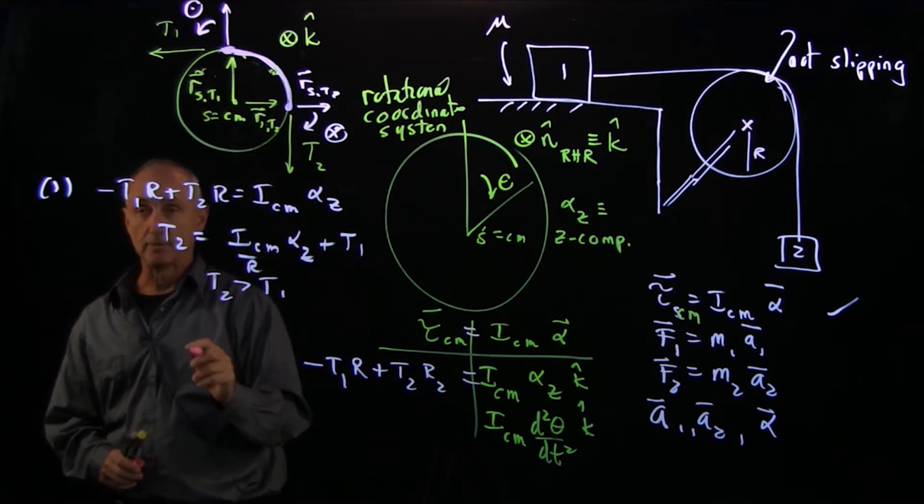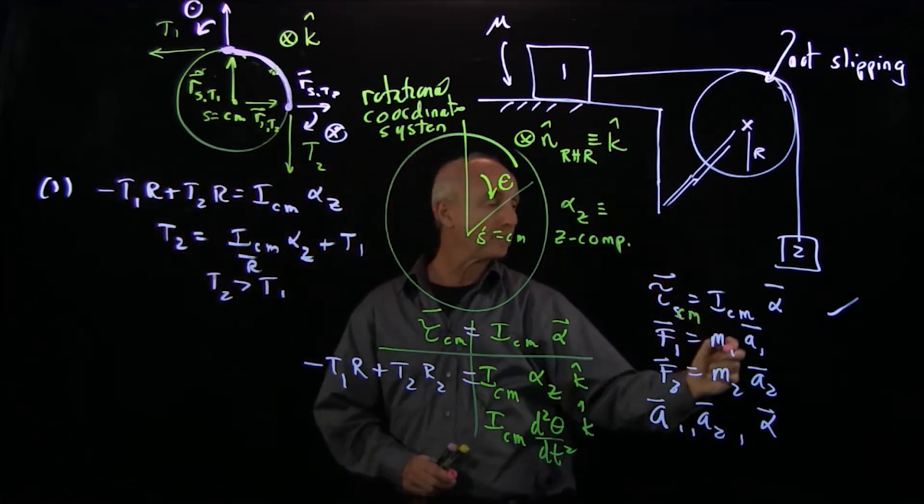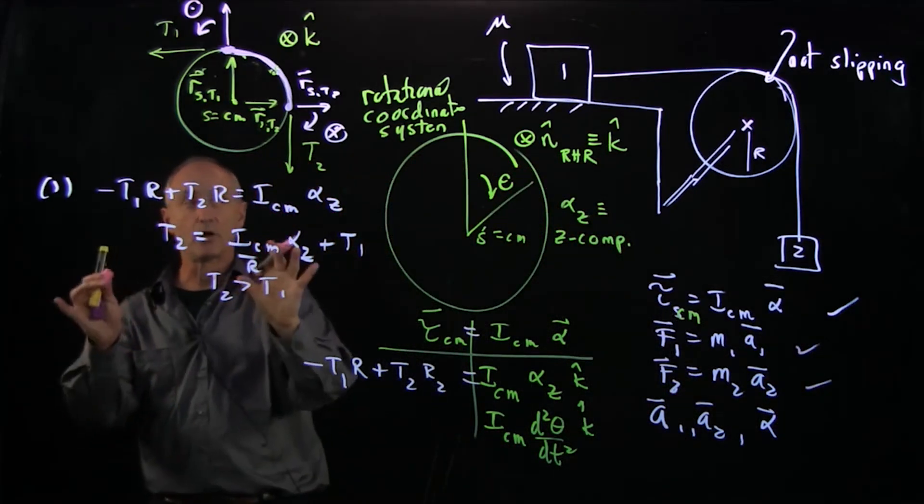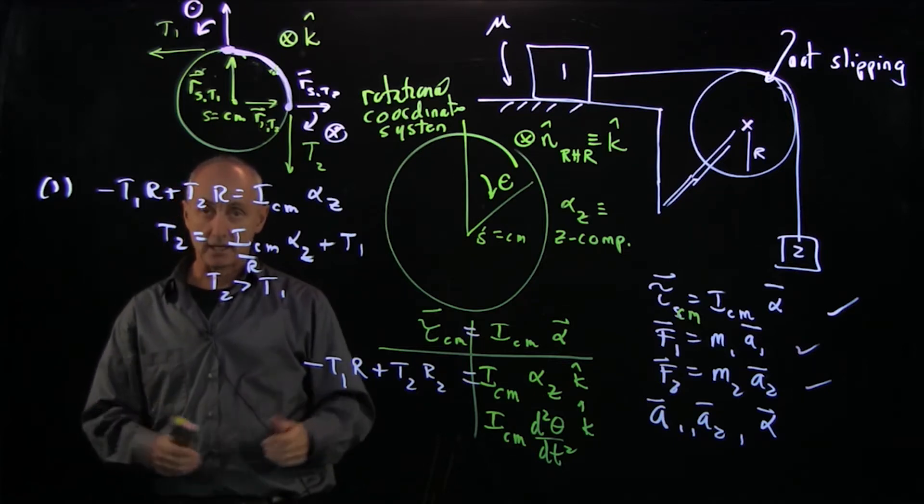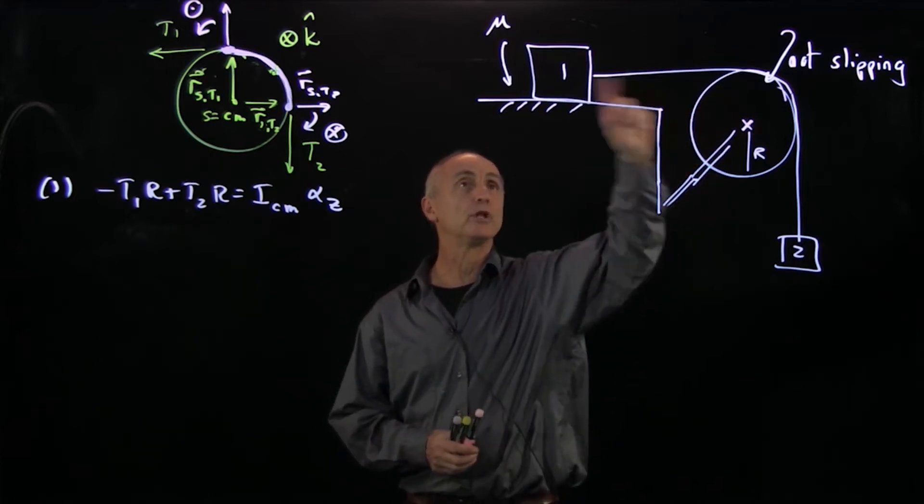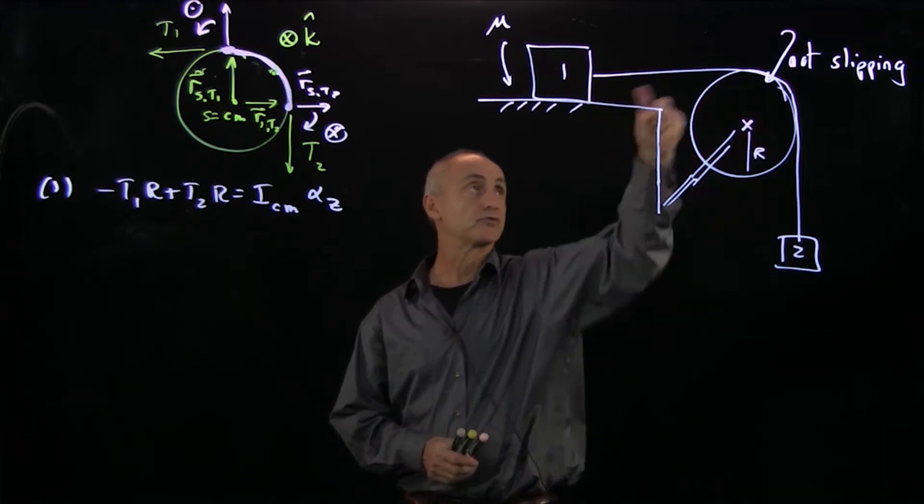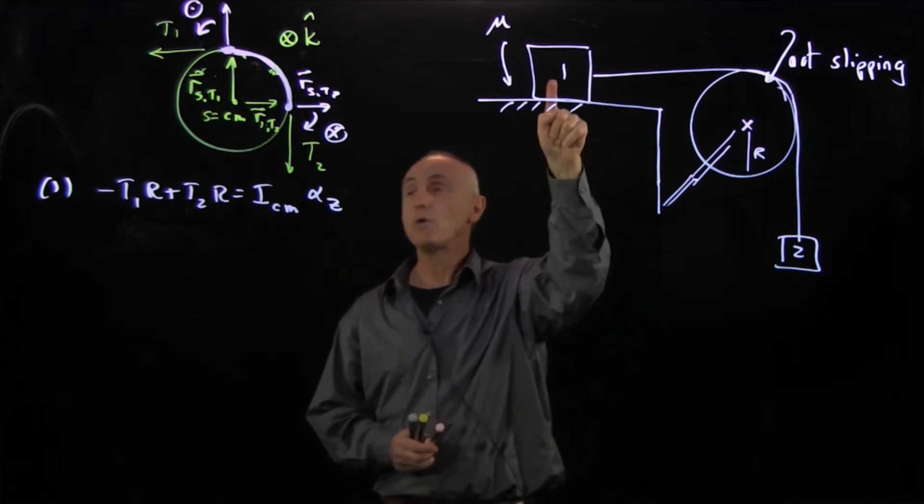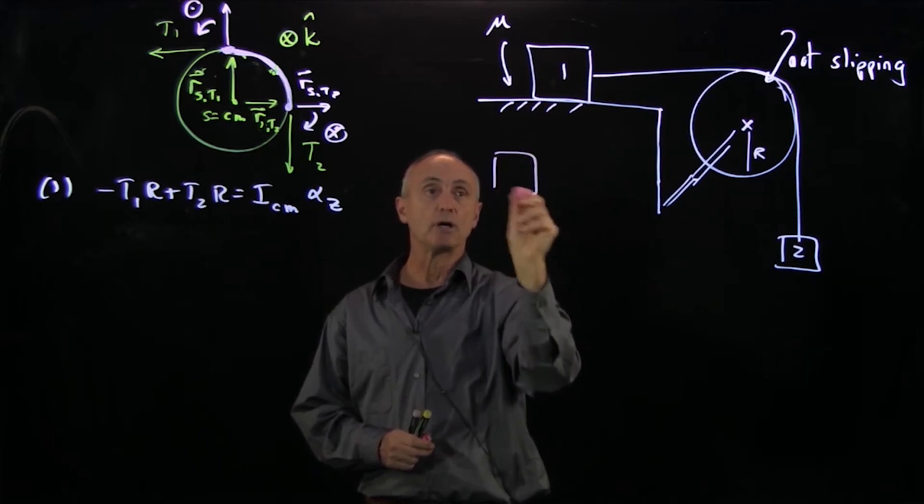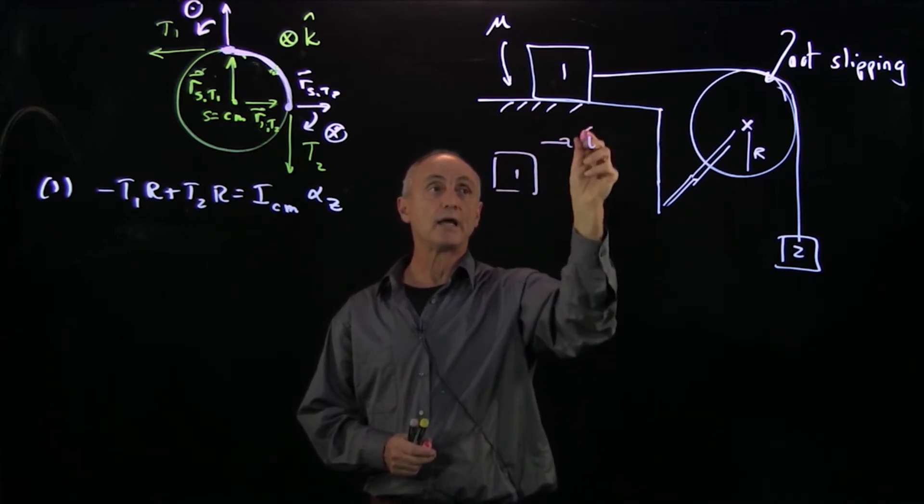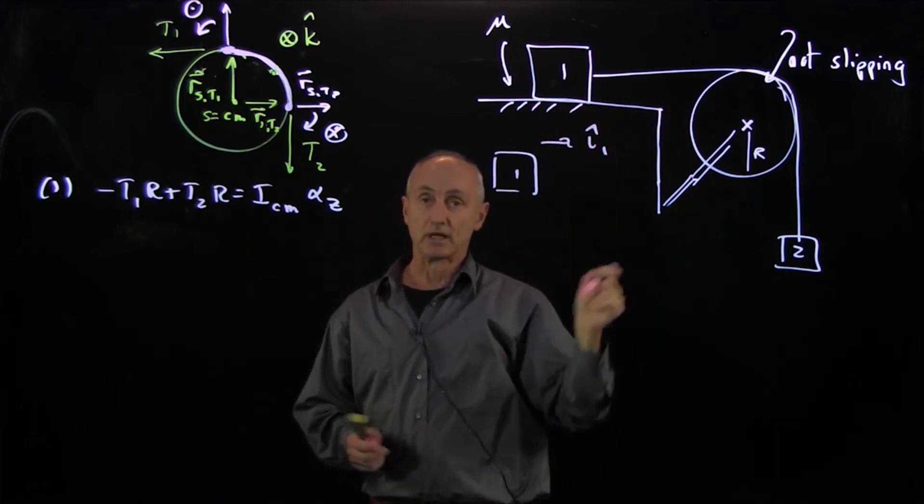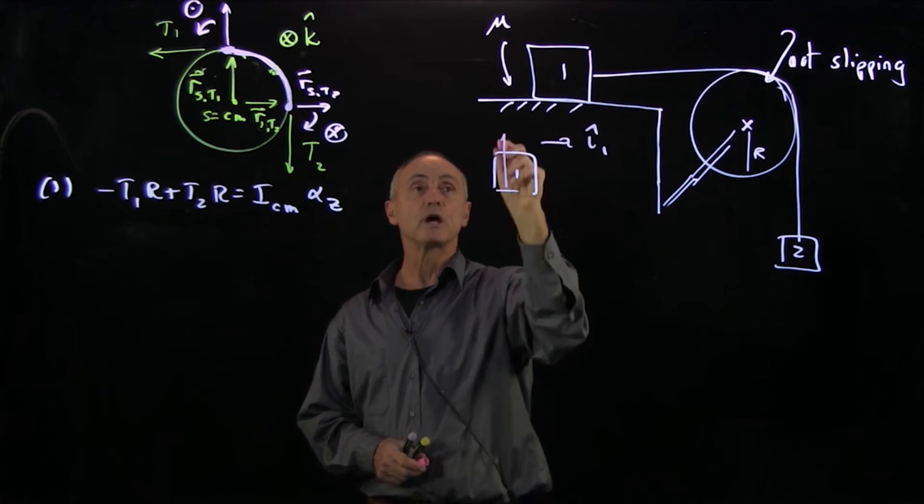The next step is to analyze Newton's second law on both objects, M1 and M2. So I'll save our result here, I'll erase what we don't need, and then continue the analysis. Returning to our analysis of a pulley with two masses and a string that's not slipping around the pulley, I now want to begin analysis of F equals MA on object 1. As usual, I draw object 1.